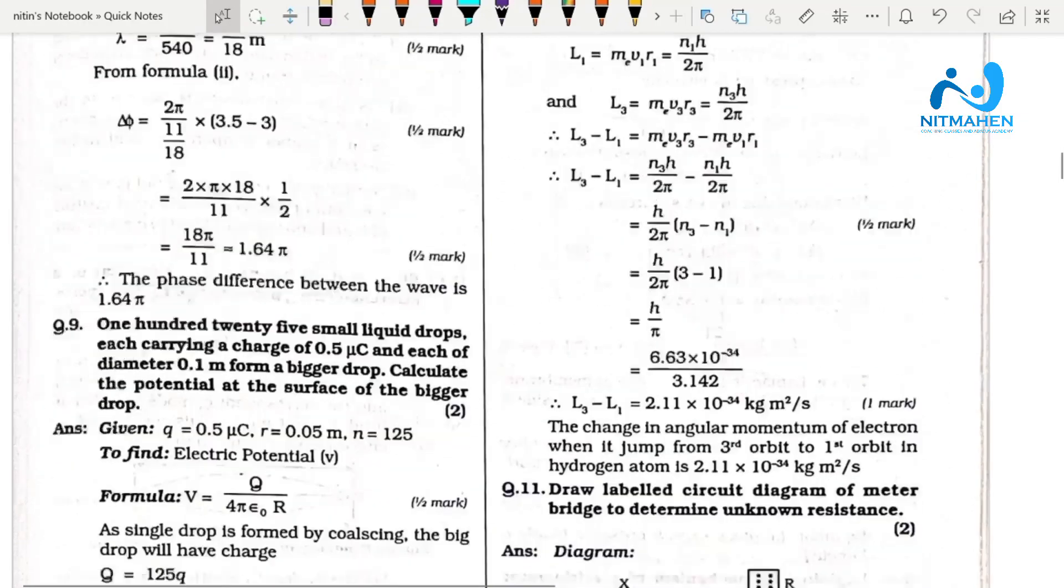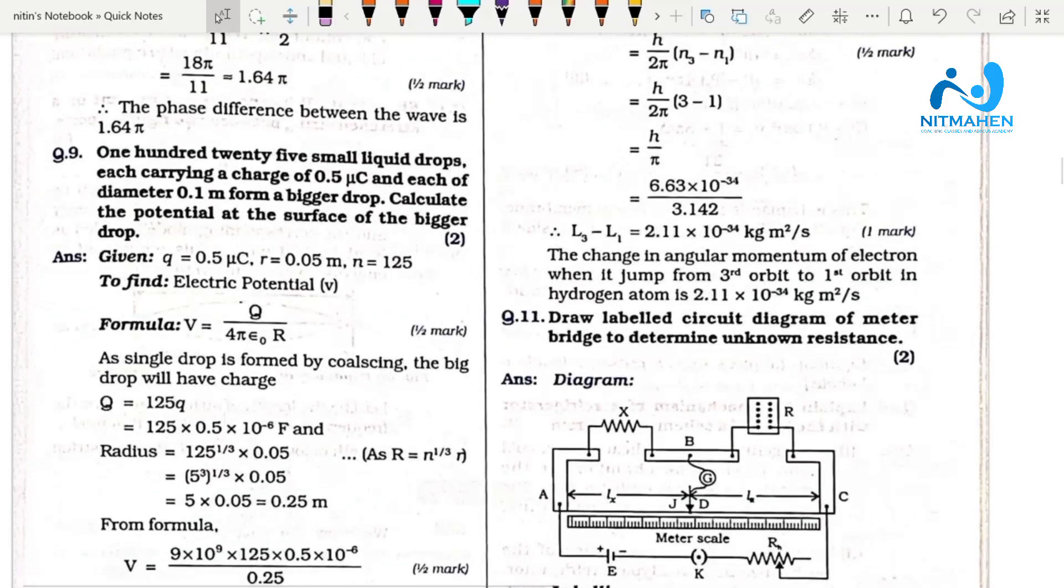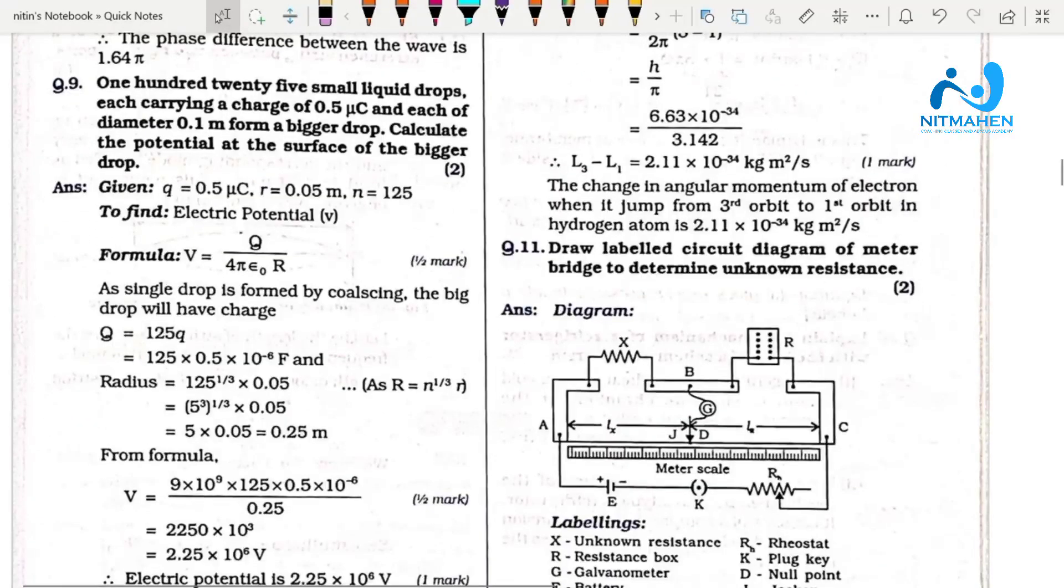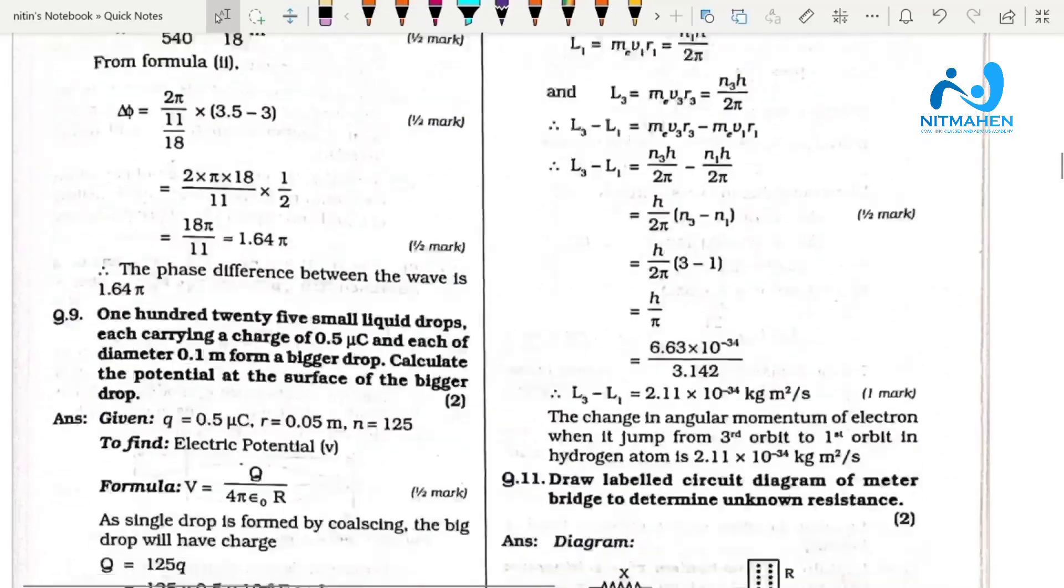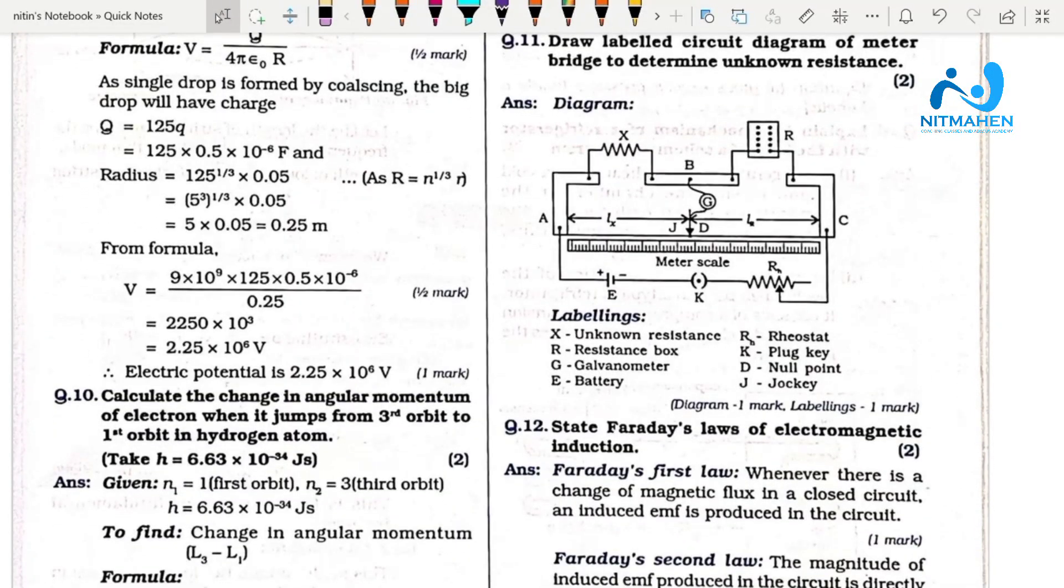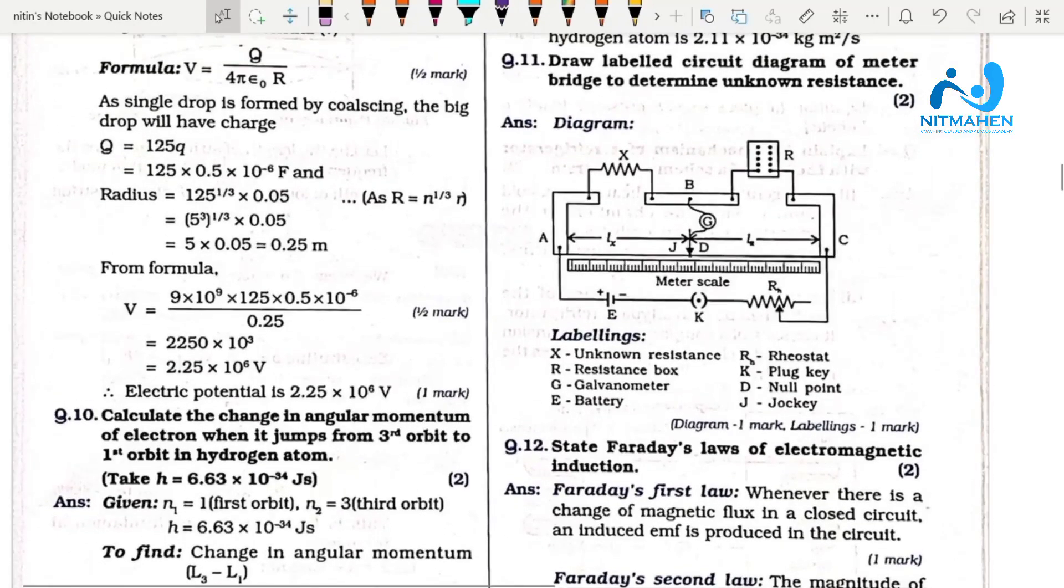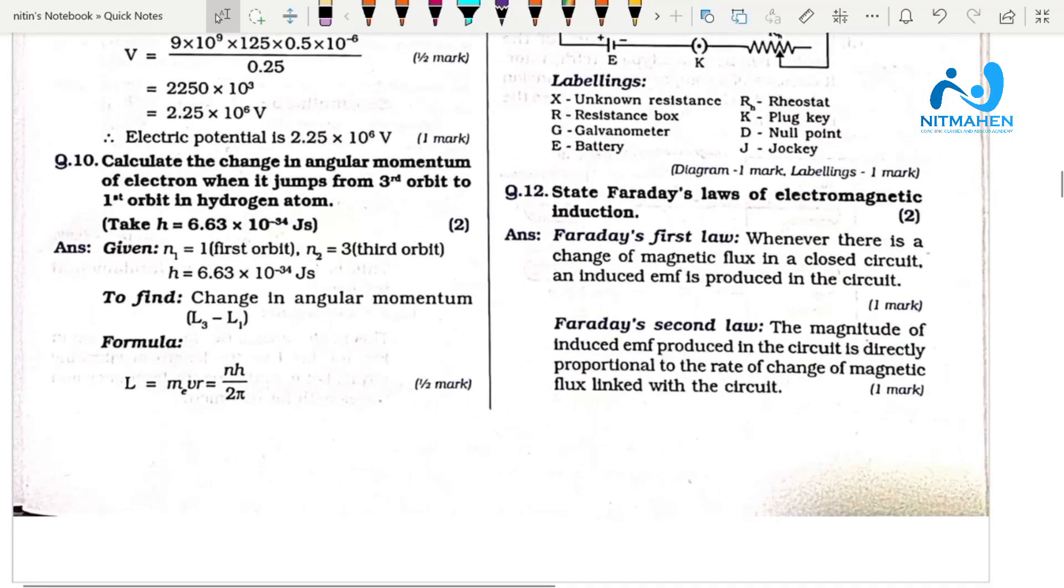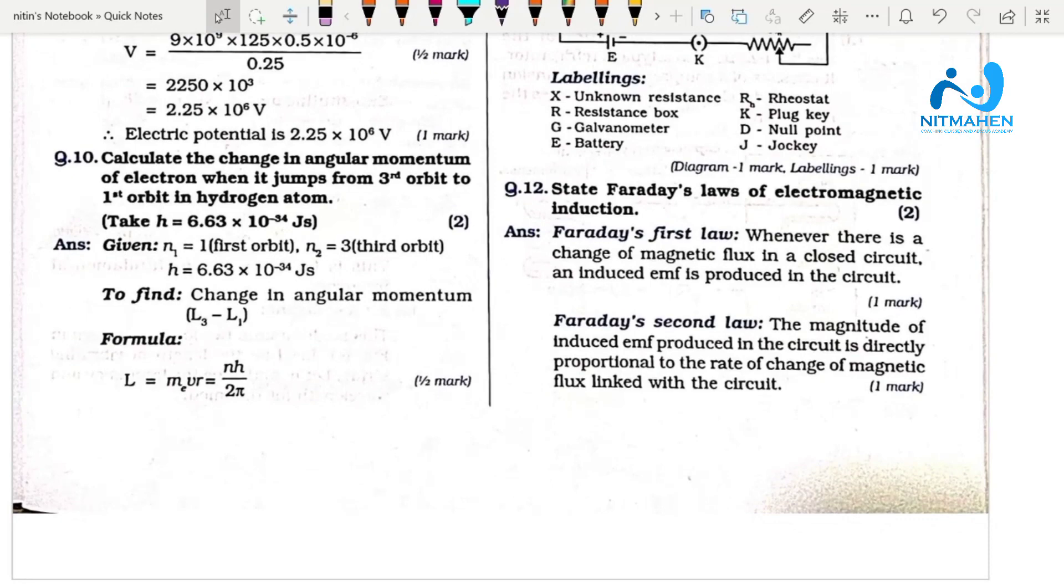The ninth question is a problem to find the potential. Then there's using the meter bridge to determine unknown resistance, and stating Faraday's law of electromagnetic induction.